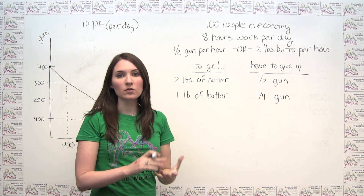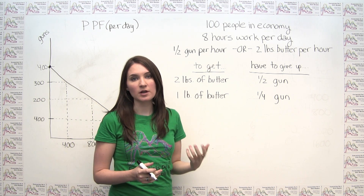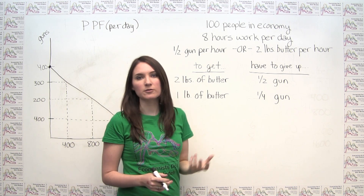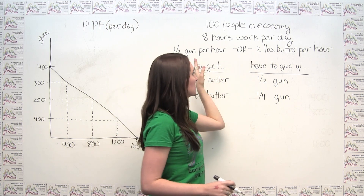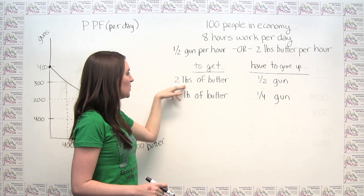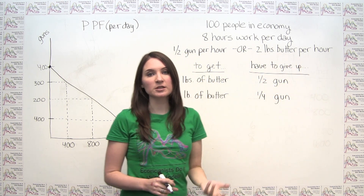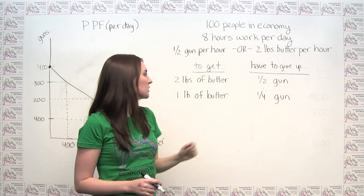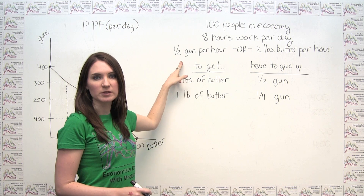Economically speaking, we say that the cost of something is what one has to give up in order to get it, and we introduce the notion of opportunity cost. So let's think about what the opportunity cost of butter is in this case. In order to get 2 pounds of butter, the person has to spend an hour making butter. But by definition, if the person is spending an hour making butter, they're not spending an hour making guns. So in order to get 2 pounds of butter, we have to give up half of a gun, because that's what the person would have been doing with their hour otherwise.